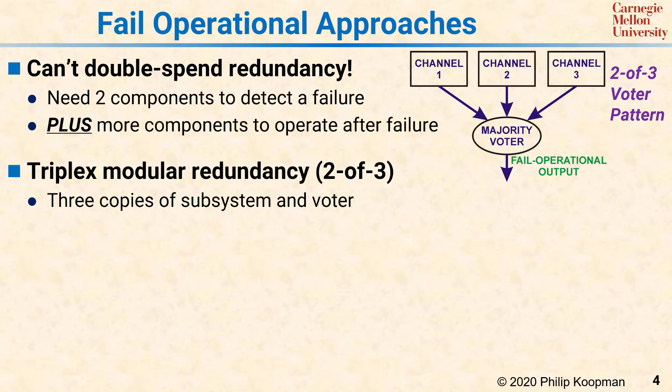How it works with the voter is that if any one of the channels fails, the other two will outvote it and the output will still be correct. This approach can work for some systems, especially where the channels are relatively unreliable and the voter can be tens, hundreds, or thousands of times more reliable than any of the individual components. So if you have complicated channels and a simple voter, this can work well for non-life-critical systems.